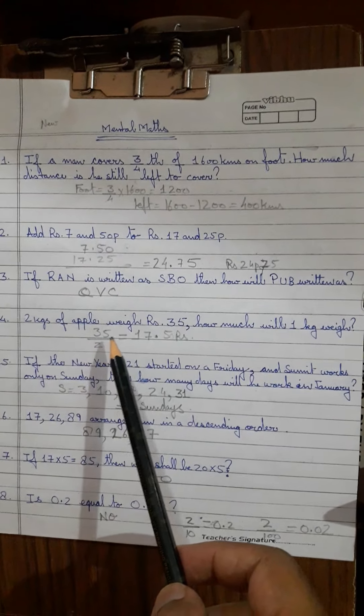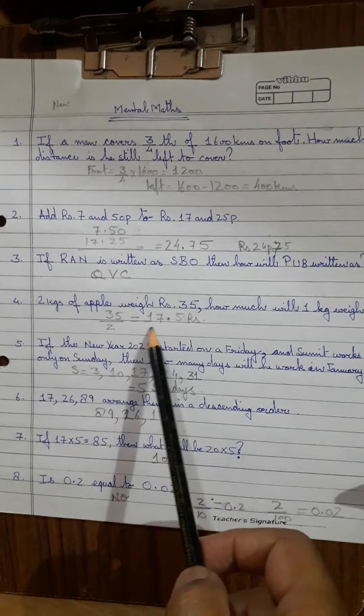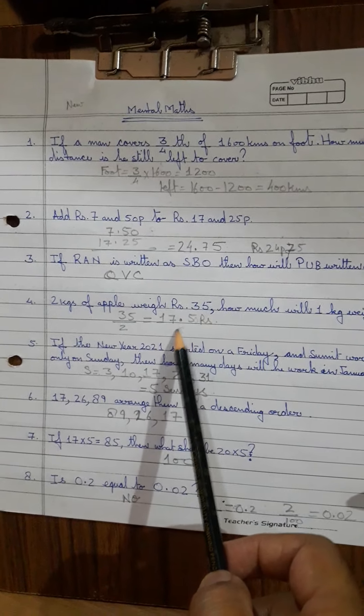2 kgs of apple weigh rupees 35. Simple, divide 35 by 2, 17.5, no brainer, 17.5.